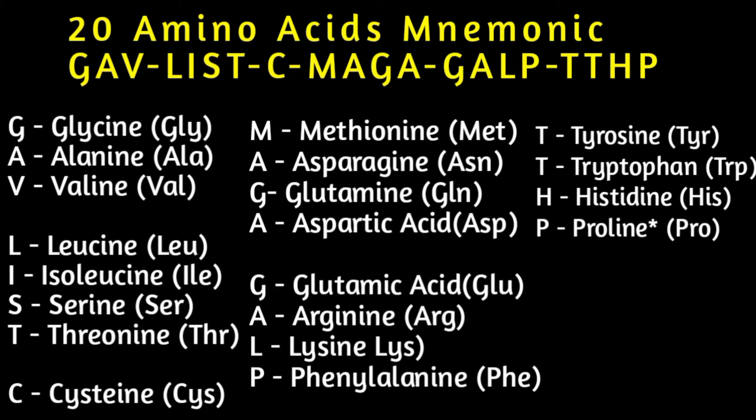Continuing the mnemonic GALP TTHP: G for glutamic acid, A for arginine, L for lysine, P for phenylalanine, T for tyrosine, the other T for tryptophan, H for histidine, and P for proline.